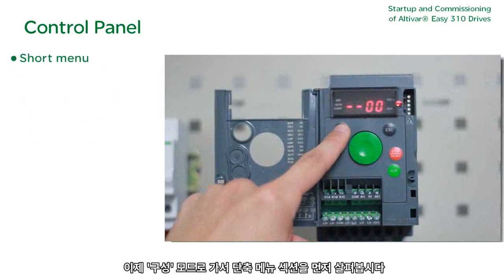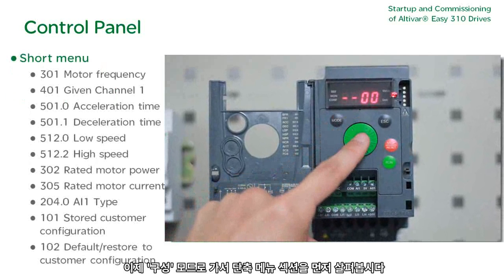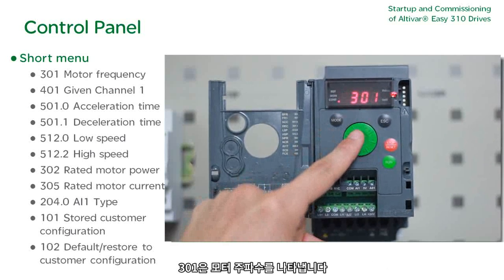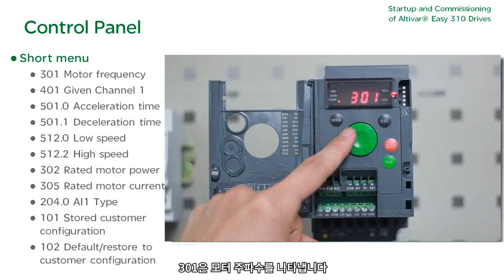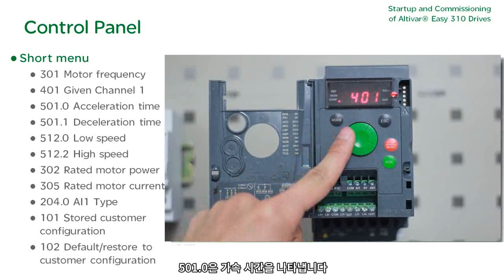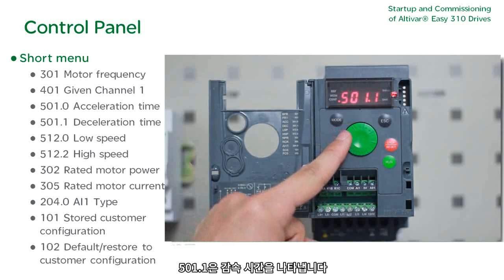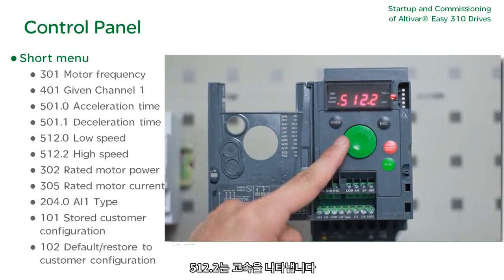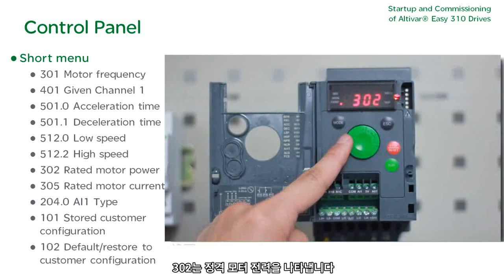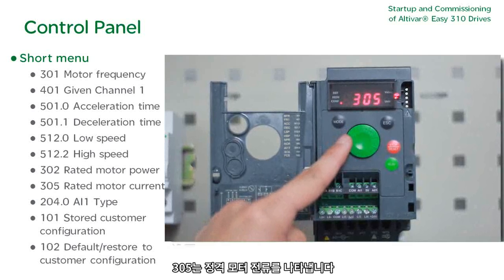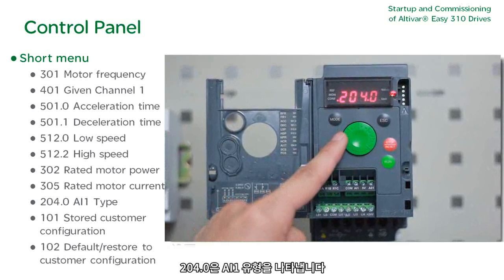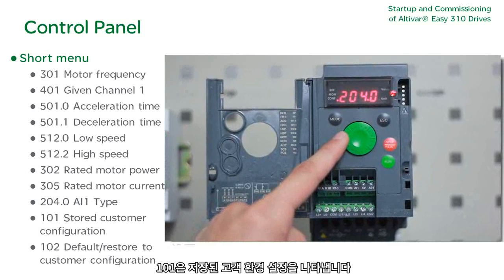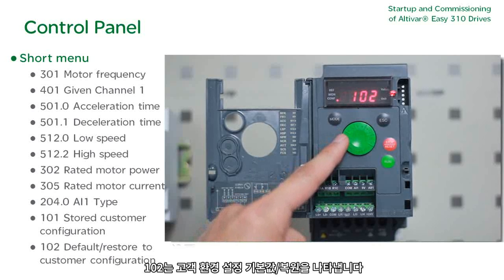Let's enter configure mode. Configure mode first displays the short menu section: 301 is motor frequency, 401 is given channel 1, 501.0 is acceleration time, 501.1 is deceleration time, 512.0 is low speed, 512.2 is high speed, 302 is rated motor power, 305 is rated motor current, 204.0 is AL1 type, 101 is stored customer configuration, and 102 is default restore to customer configuration.